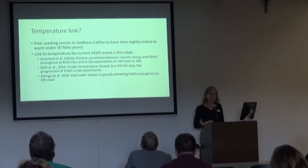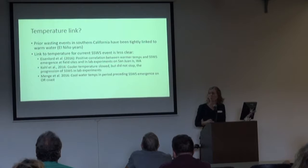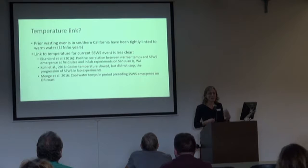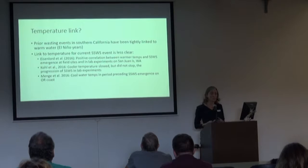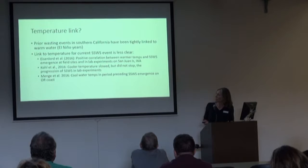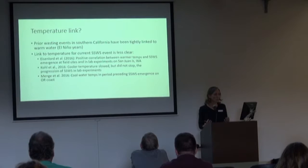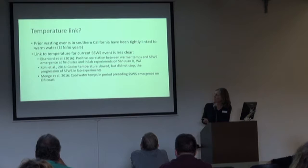Because the theme of this forum was climate change, I thought I should talk a little bit about this potential temperature link. The idea that temperature could play a role in the emergence and severity of this disease has come from prior wasting events. Sea star wasting syndrome is not a new thing — it's something we've seen primarily in Southern California, and it has cropped up periodically and is very well associated with warm water events, primarily during El Niño years. A number of groups have looked for a potential correlation with warm water for the current event, and the results have been kind of mixed.